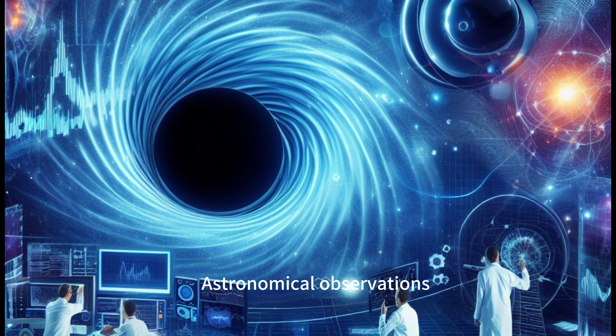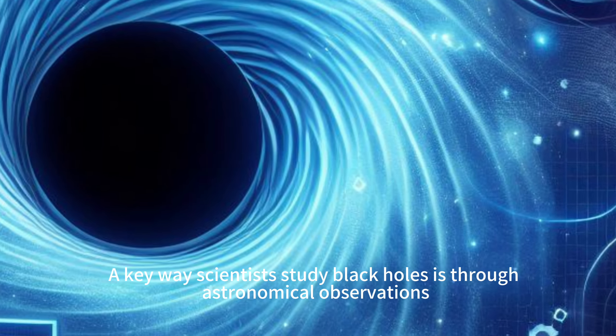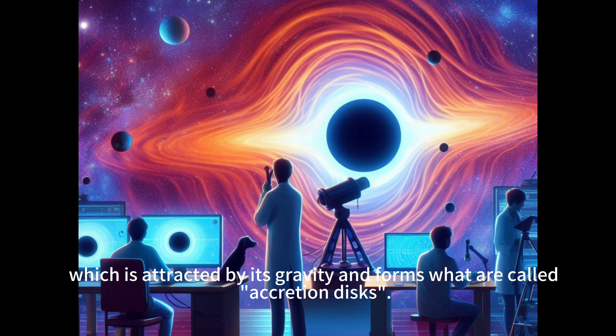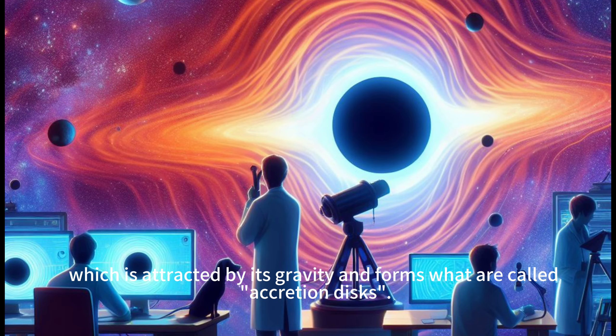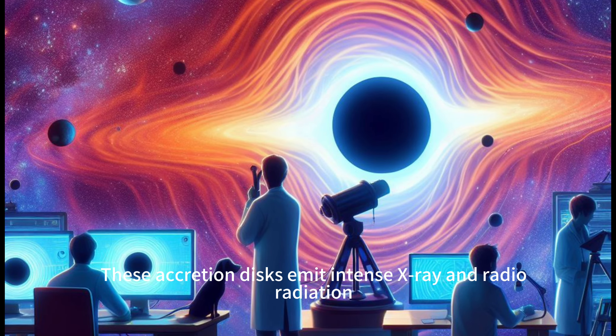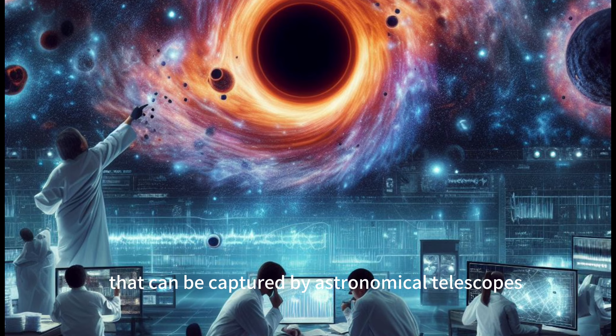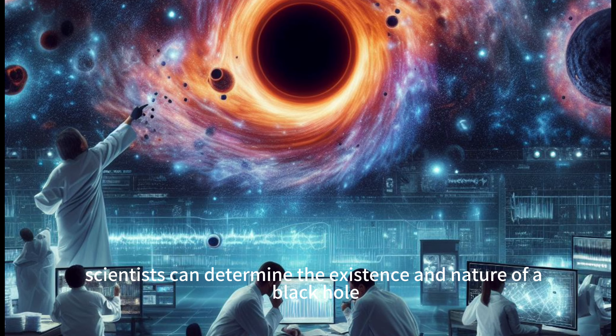A key way scientists study black holes is through astronomical observations. They observe the material around a black hole, which is attracted by its gravity and forms what are called accretion disks. These accretion disks emit intense X-ray and radio radiation that can be captured by astronomical telescopes. By observing this radiation, scientists can determine the existence and nature of a black hole.